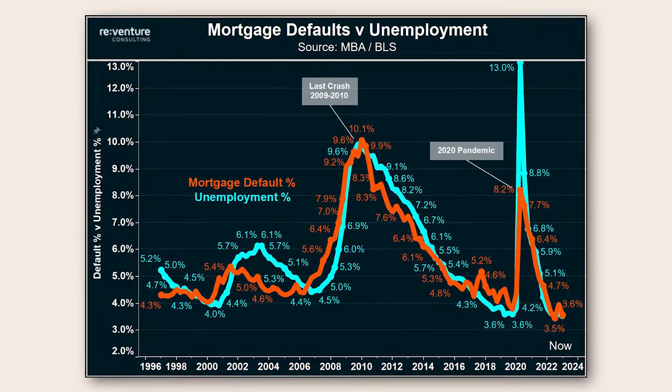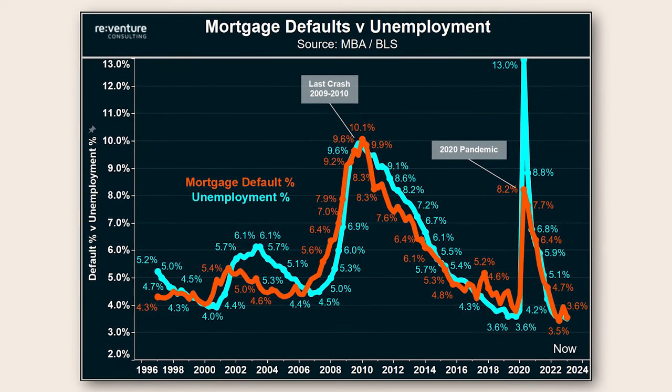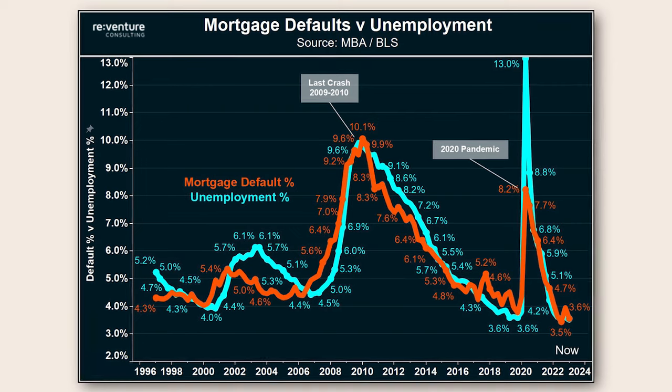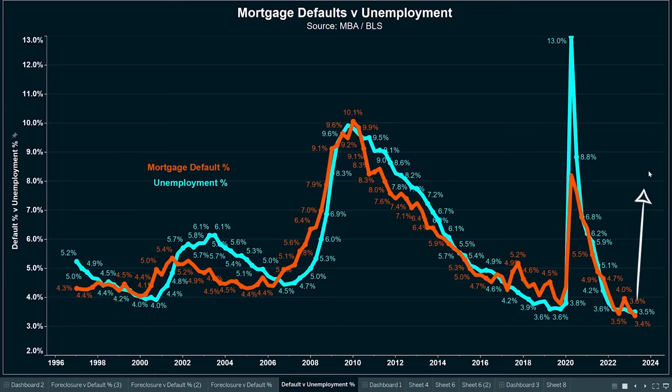Nick's recently been leaning on this chart showing a tight correlation between mortgage defaults and the unemployment rate. When unemployment goes up, mortgage defaults follow in lockstep. It's not rocket science. As the unemployment rate gets to 4%, then 5%, then 6%, maybe even 7%, the mortgage default rate will go up. That's what history says. And when the mortgage default rate goes up, there's going to be more distressed selling situations. And that's when we'll finally see the pricing crash that Nick announced in 2021.